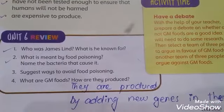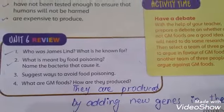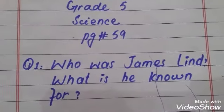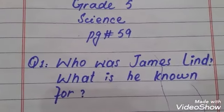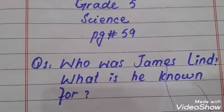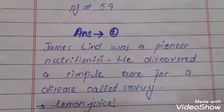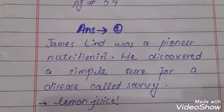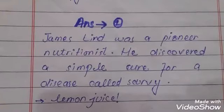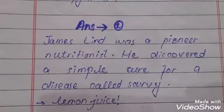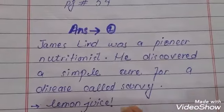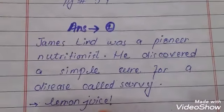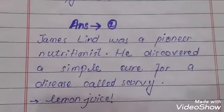Question number one: Who was Jim Lynn and what is he known for? Answer: Jim Lynn was a pioneer nutritionist. He discovered a simple cure for a disease called scurvy — lemon juice.